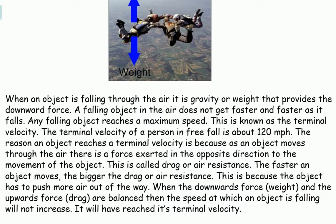The faster an object moves, the bigger the drag or air resistance. This is because the object has to push more air out of the way. When the downwards force, the weight, and the upward force, the drag, are balanced, then the speed at which an object is falling will not increase. It will have reached its terminal velocity.